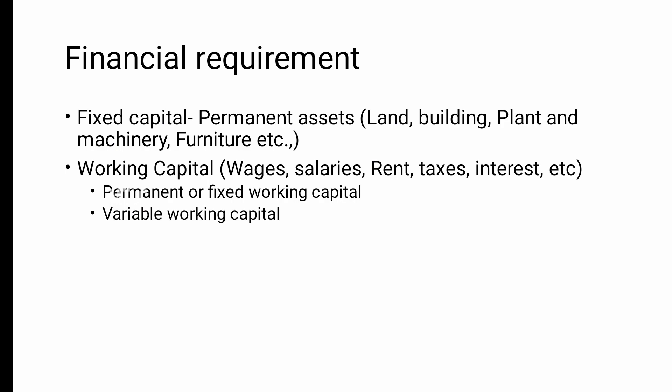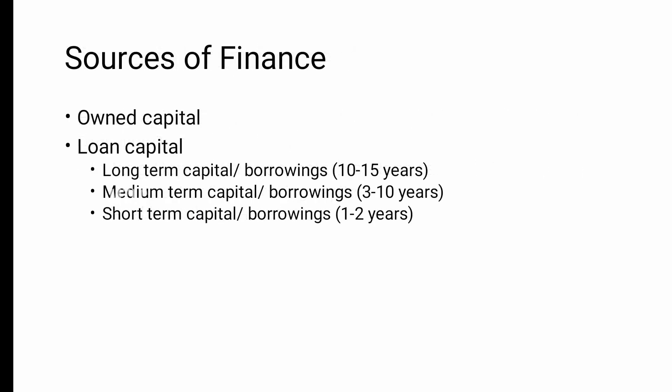Fixed capital includes land, building, plant and machinery, fridge, shelves, and furniture. Working capital includes items like labour, tax, and other running expenses. There is permanent working capital and variable working capital. You should always have sources of finance for permanent working capital. Long term is 10 to 15 years, medium term is 3 to 10 years, and short term is 1 to 2 years.